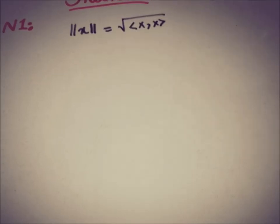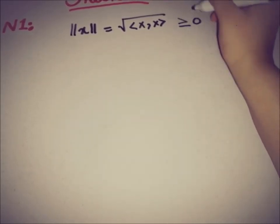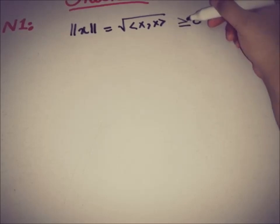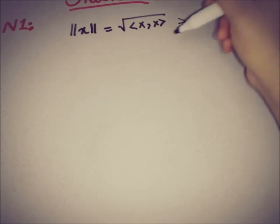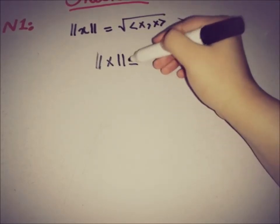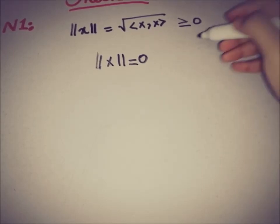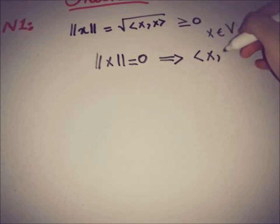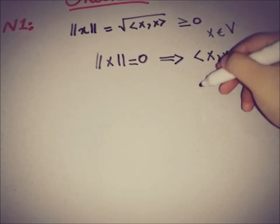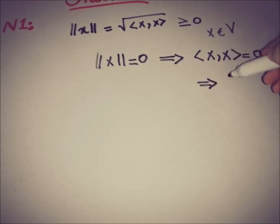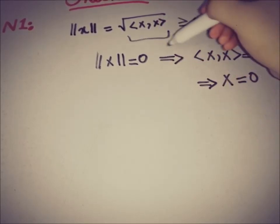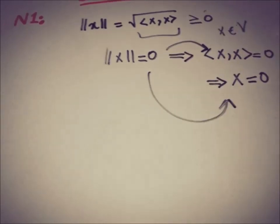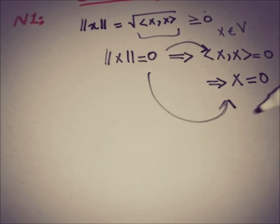The relation is that the inner product is greater than or equal to zero for all values of x. If we take the norm of an element equal to zero, for x belonging to inner product space V, then the norm equal to zero implies the inner product is equal to zero. By the definition of the inner product, this implies x is equal to zero.